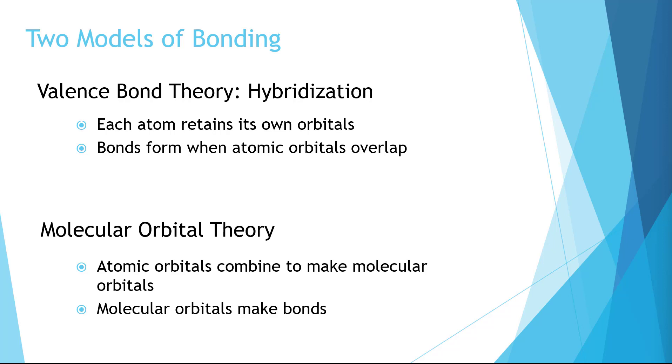In this class, we'll talk about two ways that we model bonding. While this video is specifically about molecular orbital theory, I want to frame our entire discussion by comparing and contrasting these two models. Both valence bond theory and molecular orbital theory allow us to describe and explain bonding in molecules and to some extent predict what they will do.